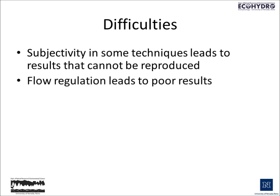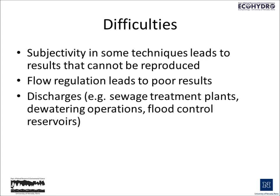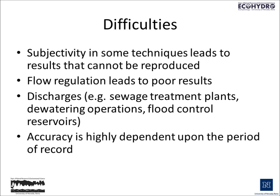Whenever we have systems with flow regulation — that would include dams, reservoirs, or anything of that nature — we have poor results, because the hydrograph separation techniques we're using usually apply to unregulated watersheds. That means there are no external influences on flow rates other than the geology, shape, and land cover in the watershed itself. Discharges not part of the natural hydrologic cycle — things like sewage treatment plants, dewatering operations, or flood control reservoirs — also complicate hydrograph separation because they add a component to the flow not associated with the natural system. Accuracy is also highly dependent upon the period of record and the consistency of response and changes in land use in a watershed.